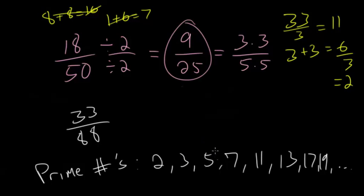For a number to be divisible by 5, it would have to end in a 5 or a 0, which neither of these do. So then we go to 7.